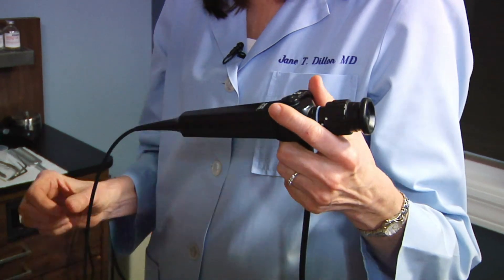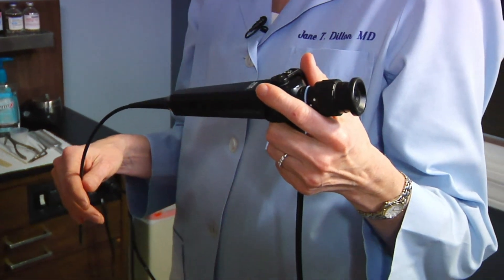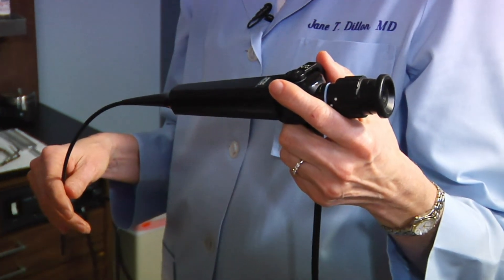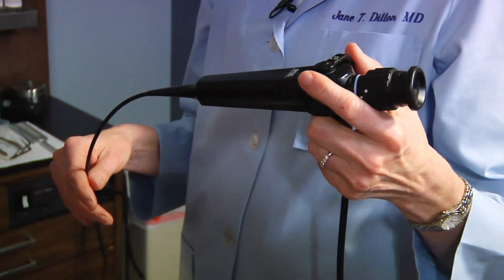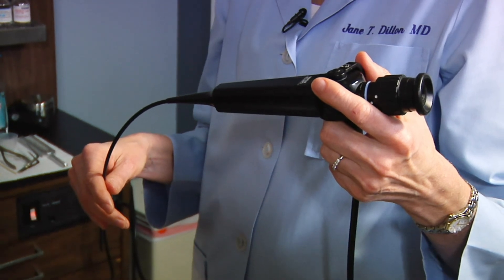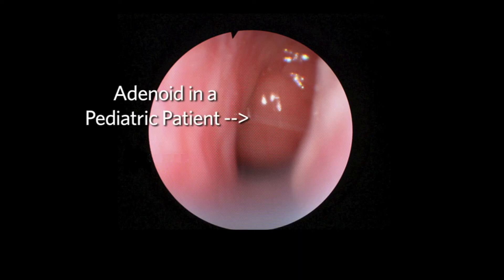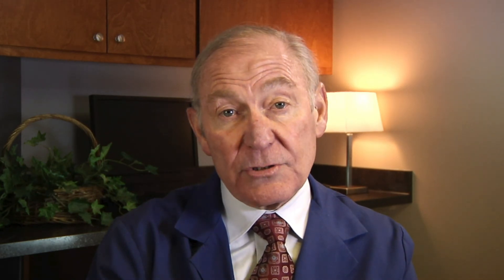If one specifically wants to view the nasopharynx, a flexible endoscope is preferable. In the pediatric age group, it is used to evaluate adenoidal size. In adults, it is used in a patient who has a unilateral middle ear effusion without an obvious cause, to rule out the possibility of nasopharyngeal carcinoma.